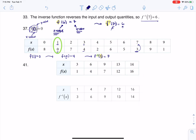And for 41, this gave us a table. So this was the table given to us. And they asked you to come up with the inverse function. And all you do when you go from original functions to inverse functions is you swap out x values and y values.